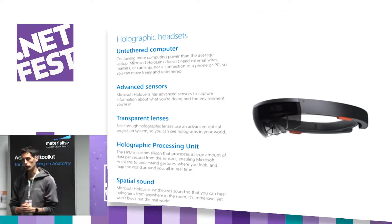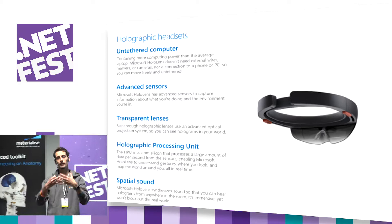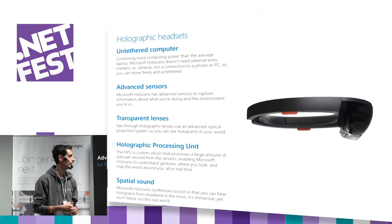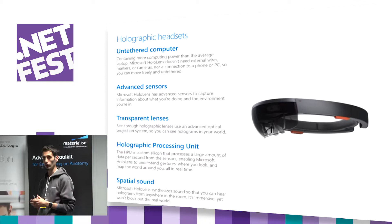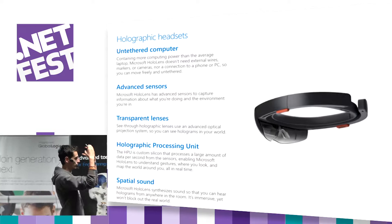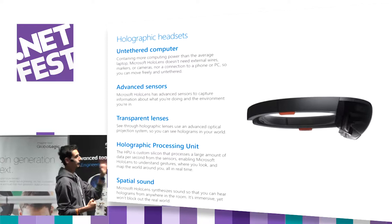The main feature of HoloLens is that it's an untethered computer — everything is built in: the CPU, GPU, Wi-Fi, Bluetooth, storage. You don't need any cable. The key feature is a set of advanced sensors and inside-out tracking cameras on top that constantly scan the environment, enabling what is called spatial mapping. Spatial mapping is the key difference between HoloLens and other augmented reality devices.